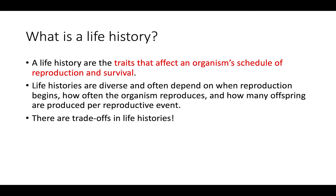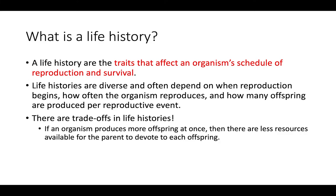There are trade-offs in life histories. For example, if an organism produces a lot of offspring in one reproductive cycle, there will be less resources available for the parent to devote to each offspring. You can think of it like a class of 500 students — the teacher has less resources and time for each individual student than a teacher in a class of only 10 students. That's one way to think of the trade-off in life histories.